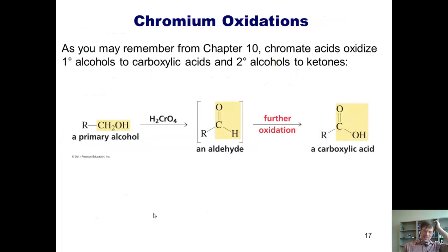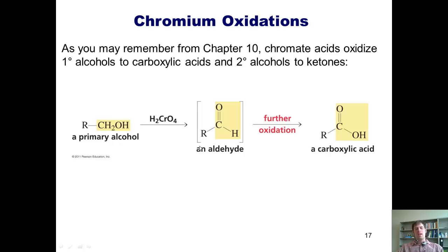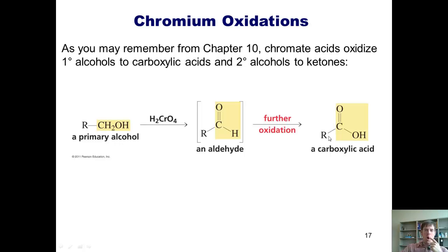We now turn back to chromium oxidation reactions, first covered in Chapter 10. If you take a primary alcohol and treat it with dihydrogen chromate, or chromic acid, you can oxidize it all the way up to a carboxylic acid. The aldehyde intermediate does exist along the way but cannot be isolated — this oxidizing reagent is so powerful that it takes the primary alcohol all the way up to the carboxylic acid.